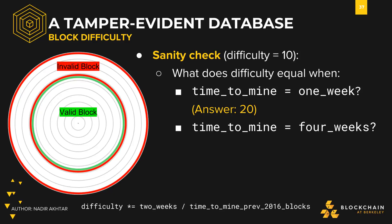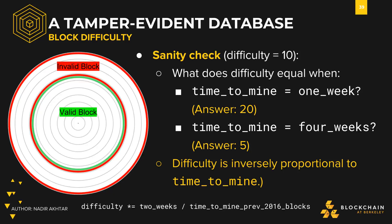If the time to mine is four weeks, then the difficulty is now five. We mine those blocks in twice the expected time, meaning that the puzzle was twice as hard as necessary, so we make it half as difficult. Difficulty is inversely proportional to the time to mine.